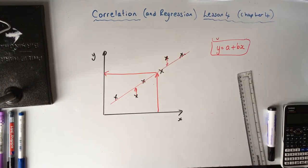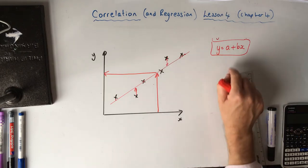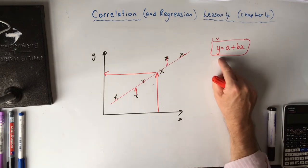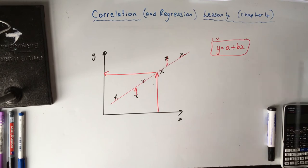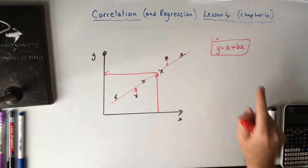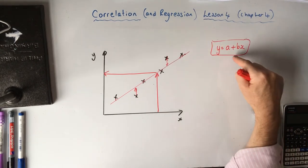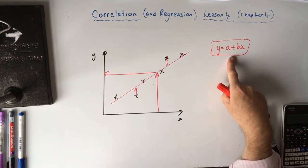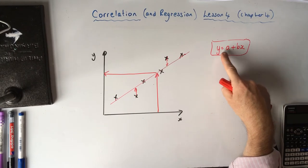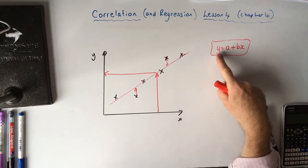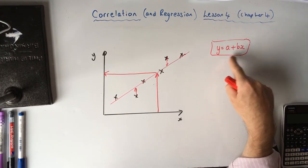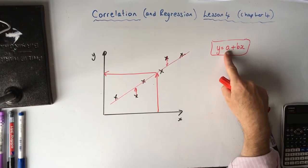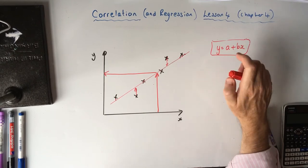So if you're given this equation, you can only go one way — put in X to find Y. You can't rearrange it and use it the other way around. You have to find the other regression line going the other way, and it would be slightly different. You must only use it one way around.